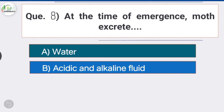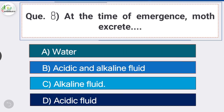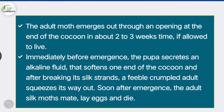Question number eight: at the time of emergence, the moth excretes — option C is the correct answer — alkaline fluid. The adult moth emerges through an opening at the end of the cocoon in about two to three weeks. Before emergence, the pupa secretes an alkaline fluid that softens one end of the cocoon, and after breaking its silk strand, a feeble crumpled adult squeezes out. Soon after emergence, adult silk moths mate, lay eggs, and die.